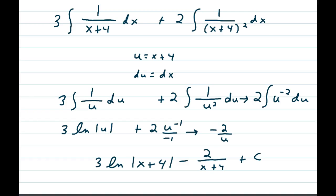And back subbing, we get an answer of 3 natural logs of the absolute value of x plus 4 minus 2 over x plus 4 plus c.